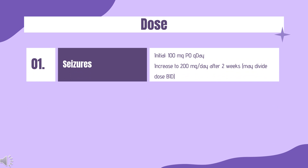Dose. Partial seizures — indicated as adjunctive therapy for partial seizures. Initial dose: 100 mg orally once daily. Increased to 200 mg per day after 2 weeks; may divide dose twice daily. May increase further by increments of 100 mg per day after a minimum of 2 weeks between adjustments, not to exceed 600 mg per day.